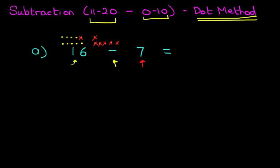How many dots are there remaining? Because that is the answer. So let's count them. 1, count with me: 2, 3, 4, 5, 6, 7, 8, 9. There are 9 dots on the left-hand side. That means that 9 is the answer. 16 minus 7 equals 9. And there's a nice big tick.